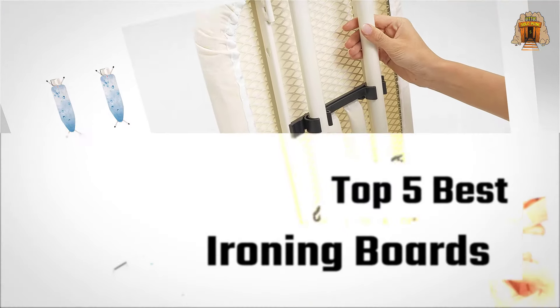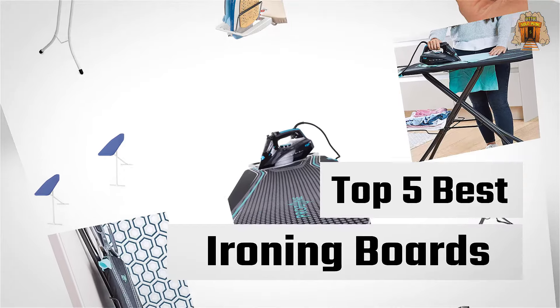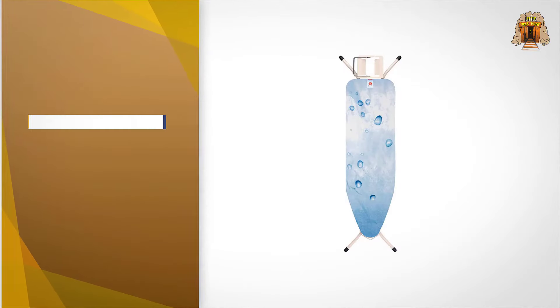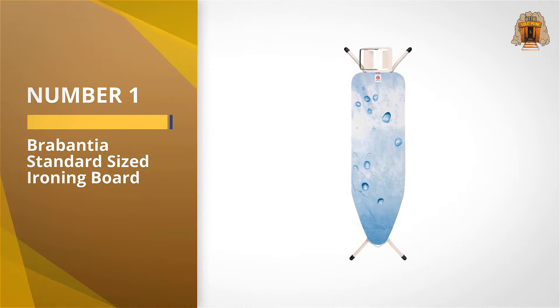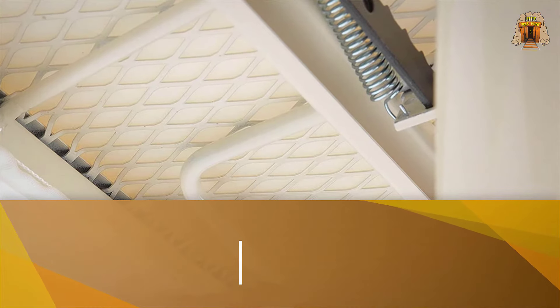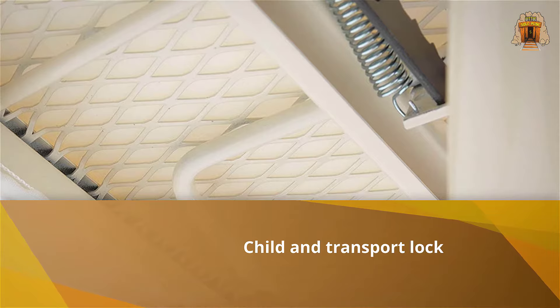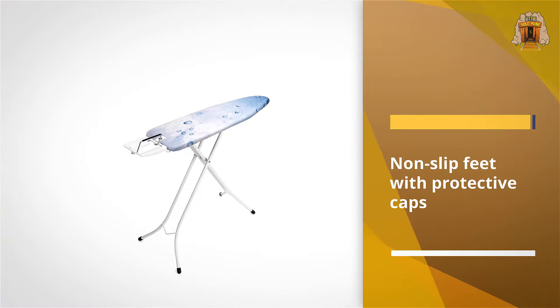Number one, most popular: Brabantia standard sized ironing board. The Brabantia standard sized ironing board is not only our best all-around choice but also one of Amazon's choice products for the best ironing board on the market. Available in a selection of 12 colors and four sizes.